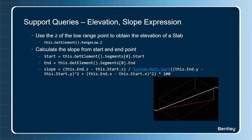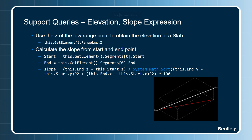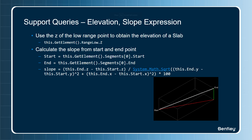Here are some additional support queries. We will look at some expression examples to get elevation and slope. To get the elevation of a slab element, use the Z value of the low range point from the current element. To calculate the slope of an element, we first store the start and end points as separate properties, and then apply a formula to calculate the slope. We will see this in the demo.